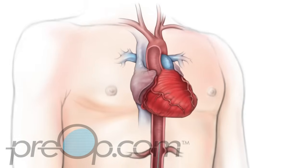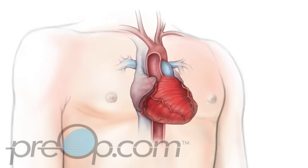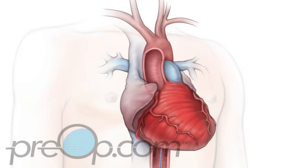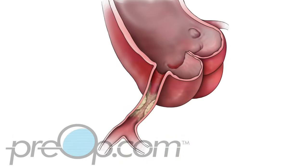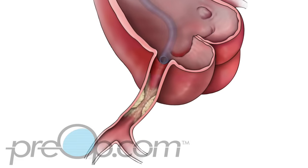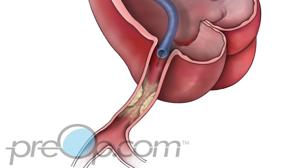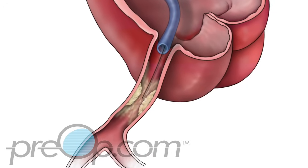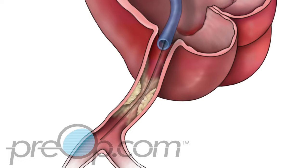A long catheter is then placed in the artery and guided to reach your heart. Dye is given through the catheter and the x-ray camera is used to watch it flow through your heart. If the cardiologist identifies an artery to be treated with an angioplasty procedure, the catheter is guided to the blockage. A guide wire is placed through the catheter to the site.